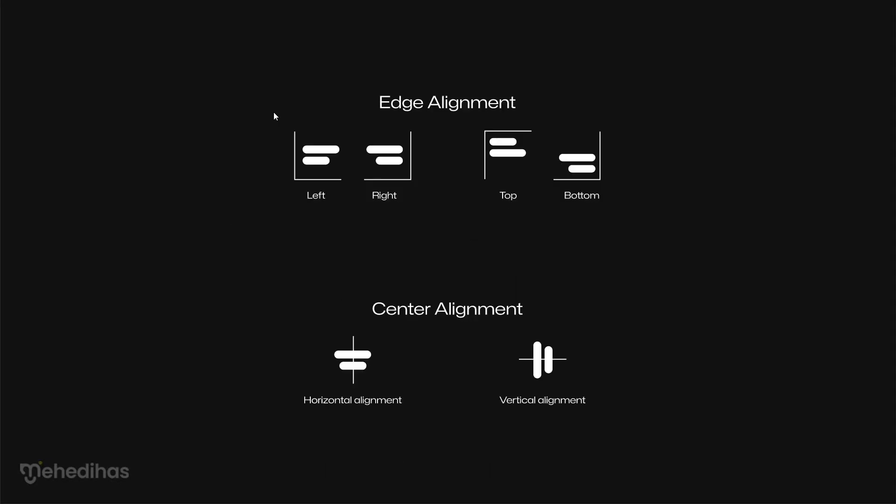The types of alignment include edge alignment and center alignment. This includes left alignment, right alignment, top and bottom. The center alignment covers horizontal alignment and vertical alignment. Let's see an example.